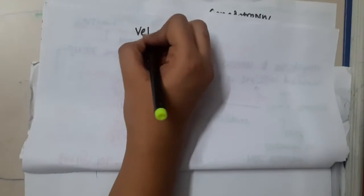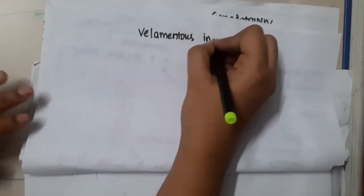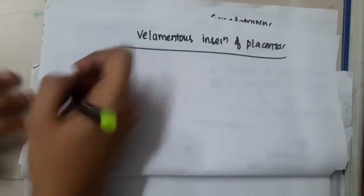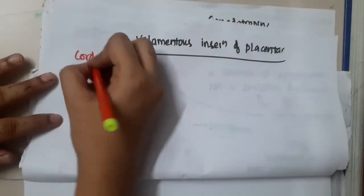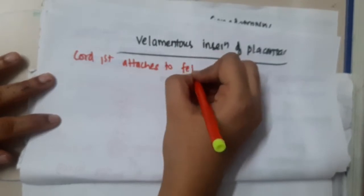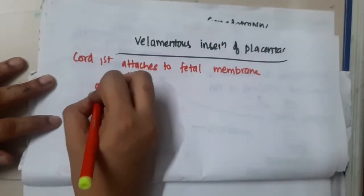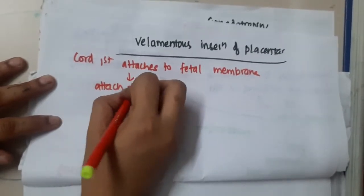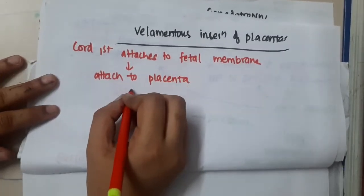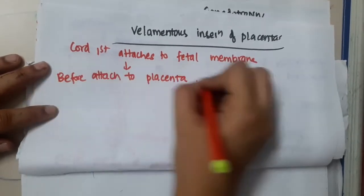Hello friends, let us now learn some important points about velamentous insertion of placenta. In velamentous insertion of placenta, the cord first attaches to the fetal membranes, and before attaching to the placenta, it will divide.